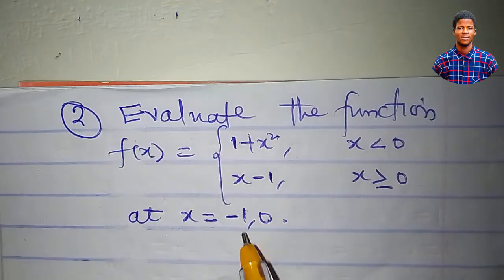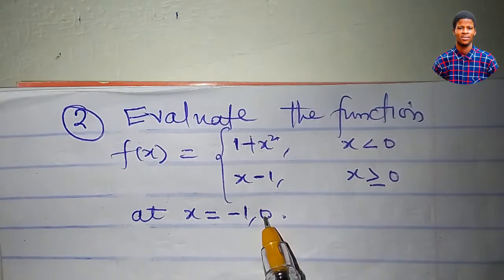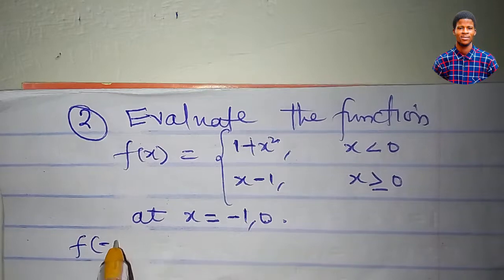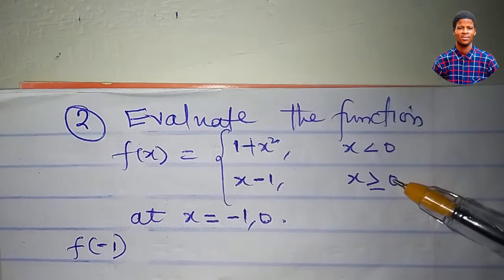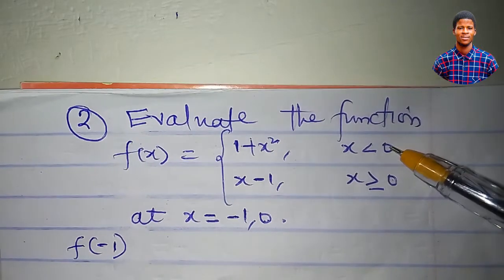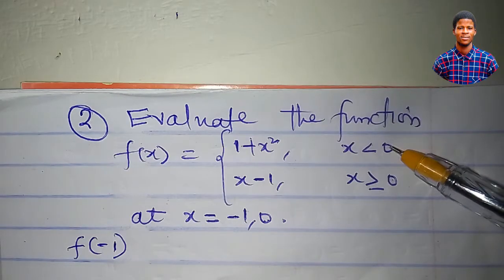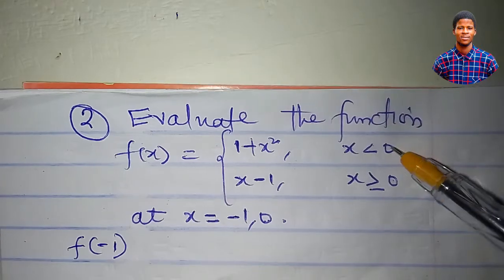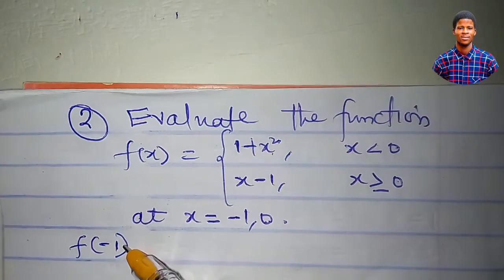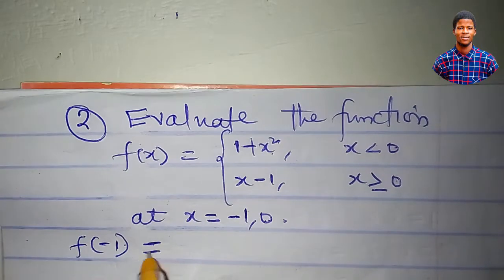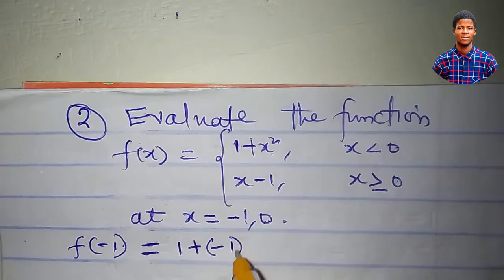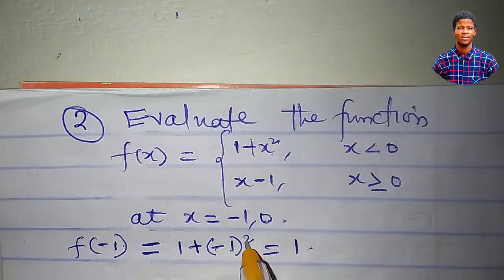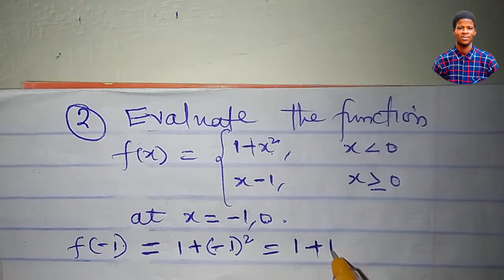Now I want to evaluate a function f(x) at x equals minus 1 and x equals 0. Looking at the two intervals, I can see that minus 1 lies in the interval x less than 0, because numbers less than 0 include minus 1, minus 2, minus 3, and so on. So this sub-function will help me determine f(minus 1). So f(minus 1) equals 1 plus x squared. In place of x squared I write minus 1 squared, which is positive 1. So this equals 2.